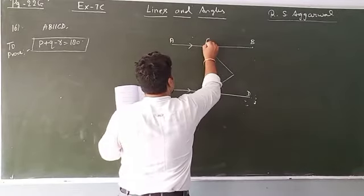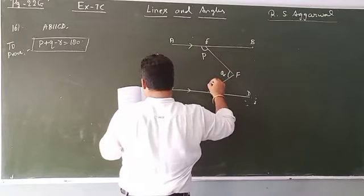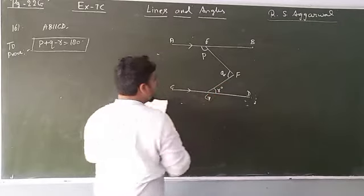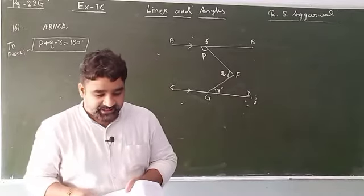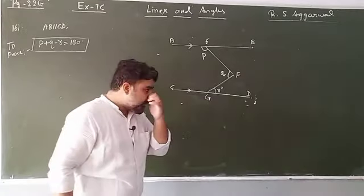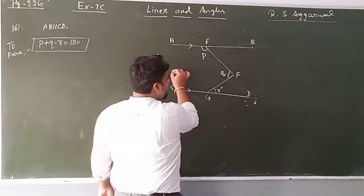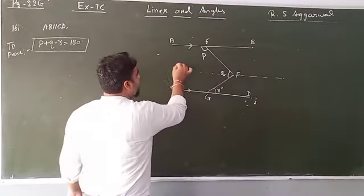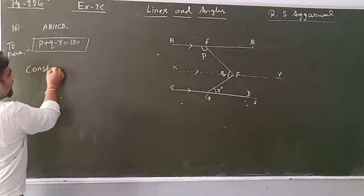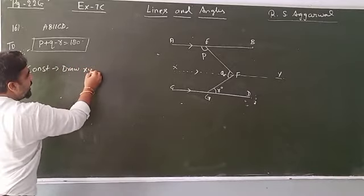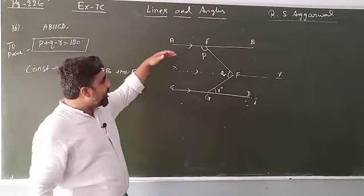This is point E, this angle is p, this angle at F is q, and this is r, and the name is G. This question is similar to question number 9 of your exercise. We need to do a construction — draw line XY parallel to AB through point F.